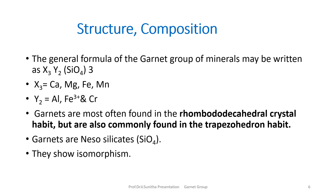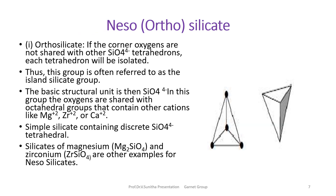Overall, garnets are nesosilicates, also known as island silicates, and they show isomorphism. These nesosilicates or orthosilicates have corner oxygens that are not shared with other silicon-oxygen tetrahedra, so each tetrahedron is separate or isolated. That is why nesosilicates are also referred to as the island silicate group. The basic structural unit is SiO4. The oxygens are shared with octahedral groups containing other cations like magnesium, zircon, or calcium. Other examples of nesosilicates include olivine (Mg2SiO4) and zircon (ZrSiO4).